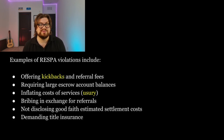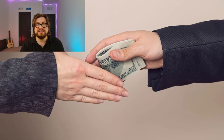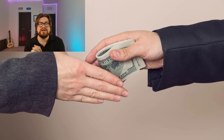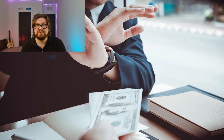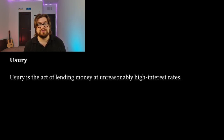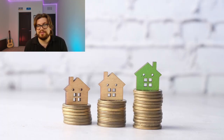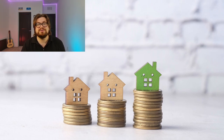Two specific violations worth highlighting are kickbacks and usury. A kickback is when a real estate agent receives financial benefits or items of value for referring clients to a business or service. Kickbacks are illegal because real estate agents are responsible for being transparent with their clients — when an agent only refers a business because they are incentivized to, it's a conflict of interest. Agents should make referrals based on the best options for homebuyers, not themselves. Usury is the act of lending money at unreasonably high interest rates. Usury laws protect homebuyers from taking out home loans with exorbitant interest rates. States each have their own usury laws that set a maximum interest rate limit for lenders to follow.